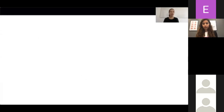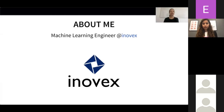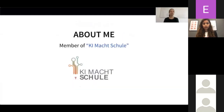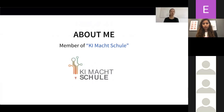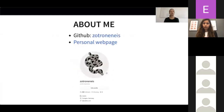A few words about me. I'm currently working as a machine learning engineer in a great German company called Innovex, where I work on various projects surrounding data engineering and machine learning. In my free time, I'm working on a voluntary project called KI-Machtschule, which translates into something like AI Go School, where we teach kids in German schools about AI and machine learning, both online and usually also in the schools. I also like working on personal projects and usually share those with the community either on GitHub or my personal web page.